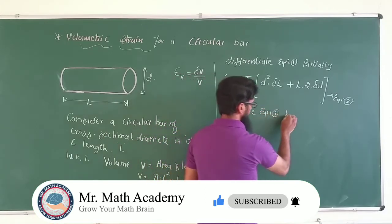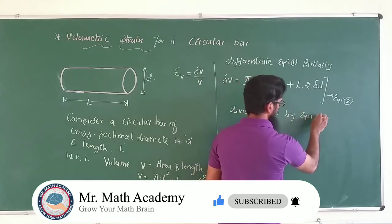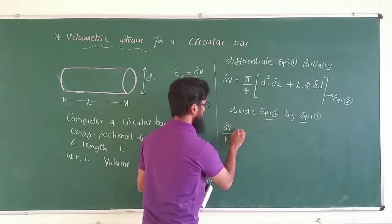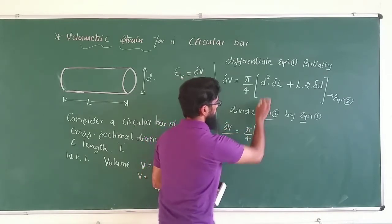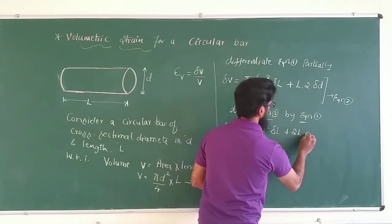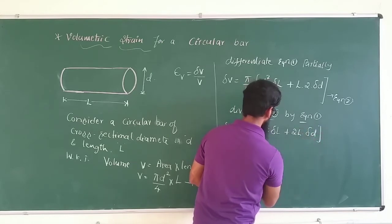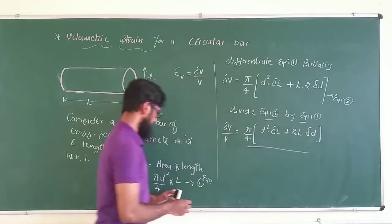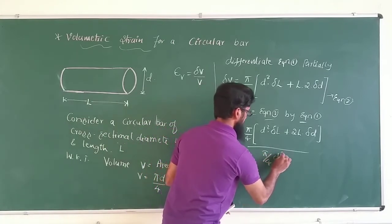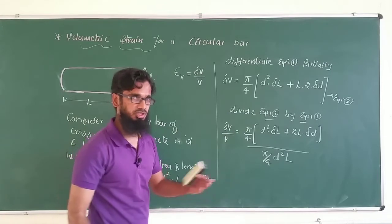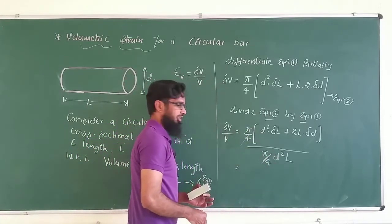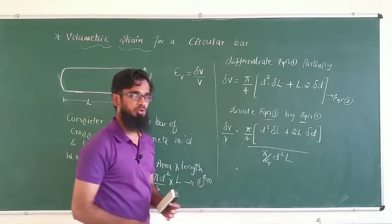We just divide Equation 2 by Equation 1. So δV/V = [π/4 · (d²·δl + 2l·δd)] / [π/4 · d²·l]. The π/4 terms cancel. The left-hand side δV/V represents change in volume to original volume, which is the volumetric strain.